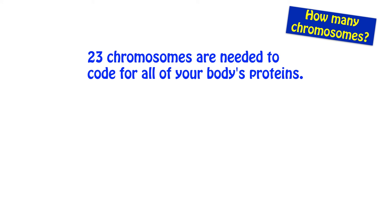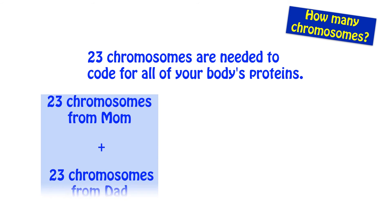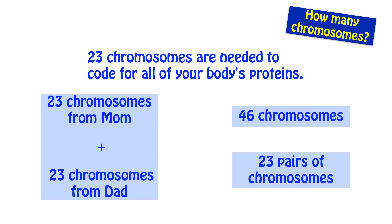How many chromosomes are present in the body? Well, in the human body, and I stress that this is different for all different species, but in the human body, there are 23 chromosomes needed to code for all of the proteins. Now, let's do the maths on this. There are 23 chromosomes from your mother and 23 chromosomes from your father. Now, what this means is there are 46 chromosomes in total and there are 23 pairs of chromosomes. Sometimes we refer to the number of chromosomes and sometimes we refer to the number of pairs. Make sure you're comfortable with the difference between them.